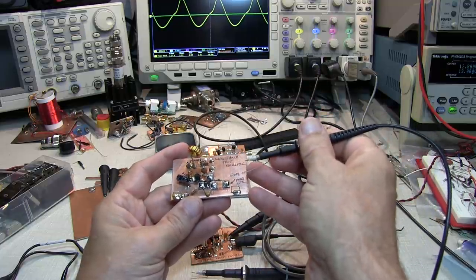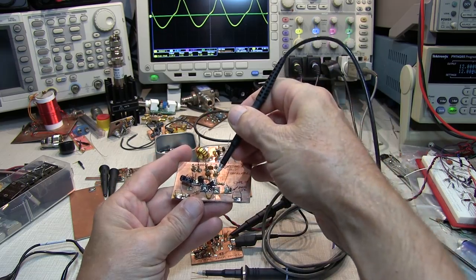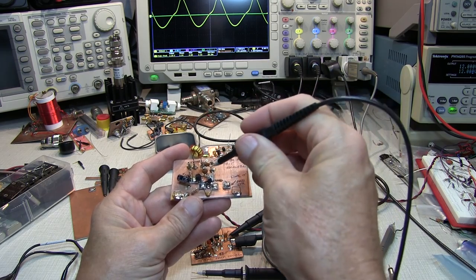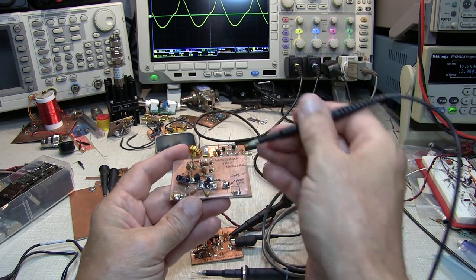But when you start working on higher frequency circuits above a couple of megahertz, that capacitive loading can dramatically affect the operation of some circuits. It really depends on the node impedance that you're probing, the particular circuit design, and what that circuit would do with that additional capacitor connected at that point to ground.